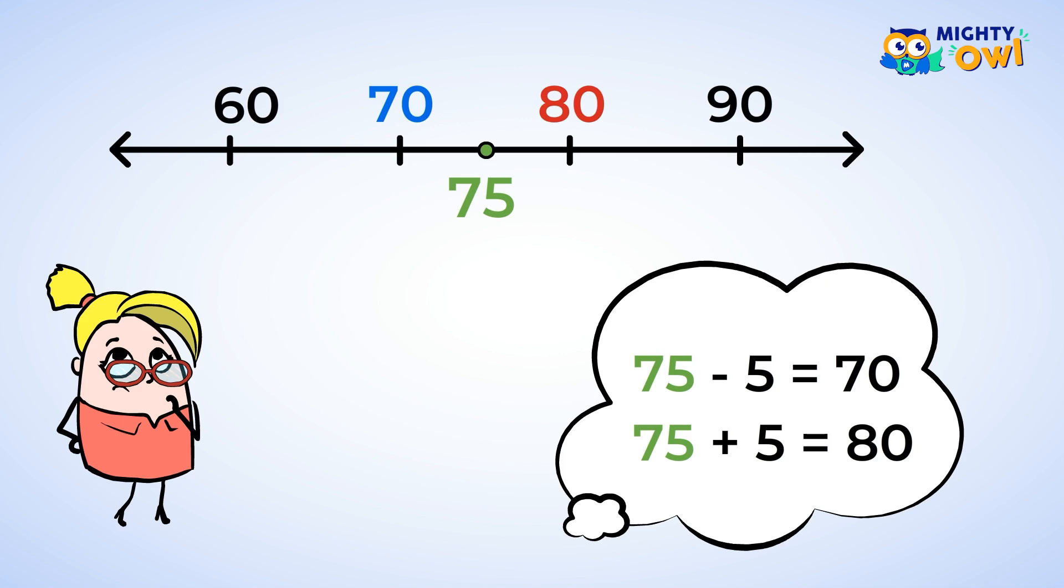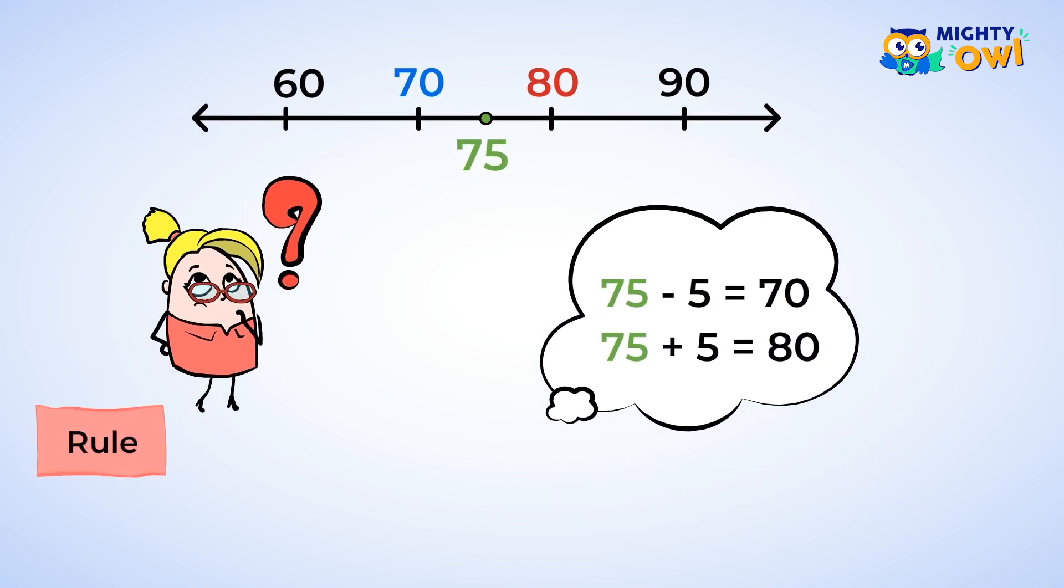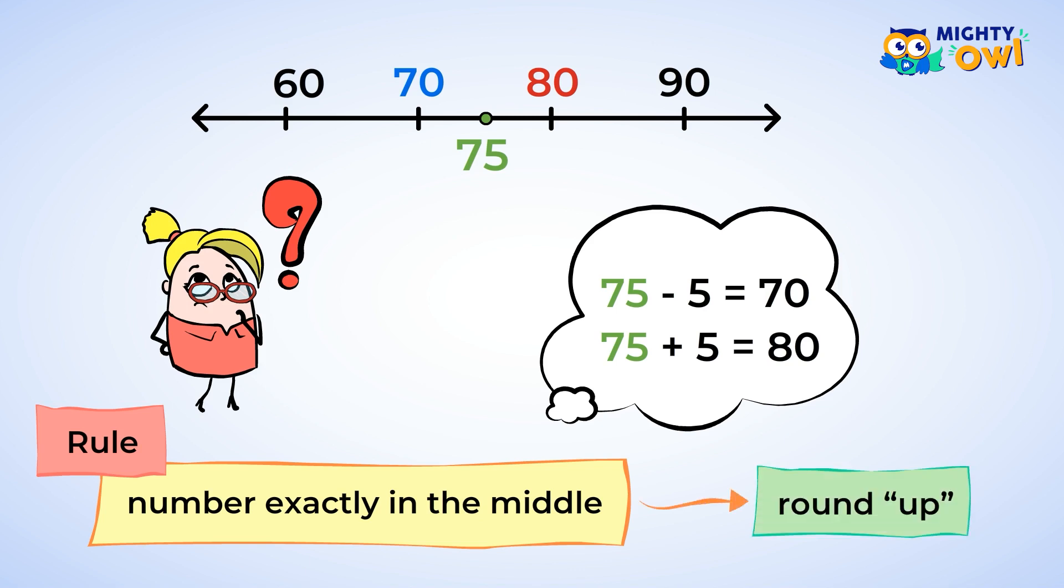So what do you think we should do? Round up or round down? Thankfully, there is a rule. The rule when a number is exactly in the middle is to always round up. This means that 75 would round to 80.